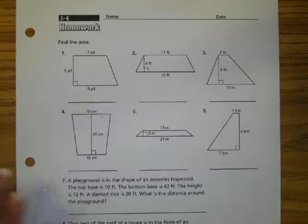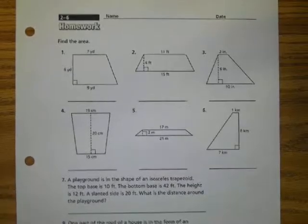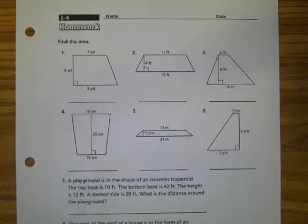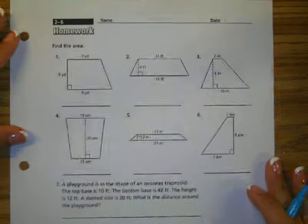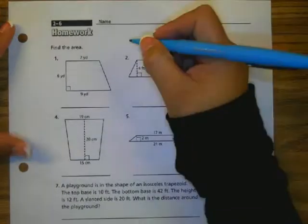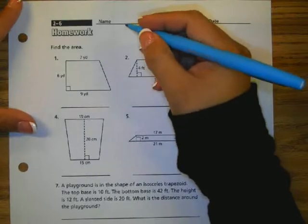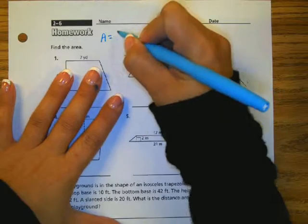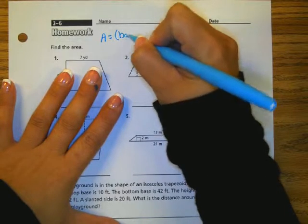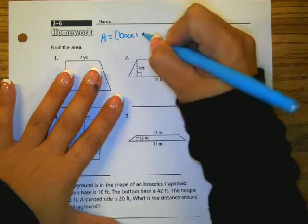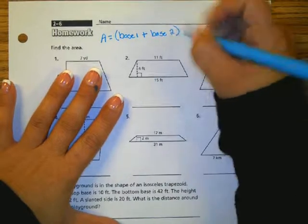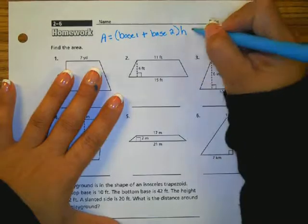Alright, tonight's homework is page 41. Today, students learned how to find the area of a trapezoid. One way to find the area of a trapezoid is to use the formula: area equals, in parentheses, base 1 plus base 2, times height, divided by 2.